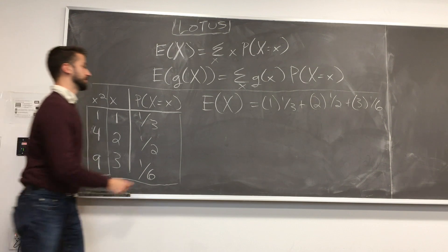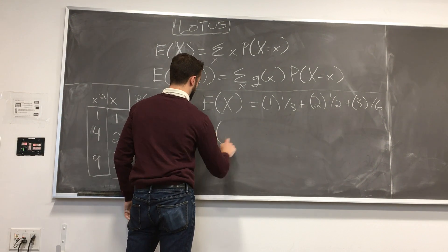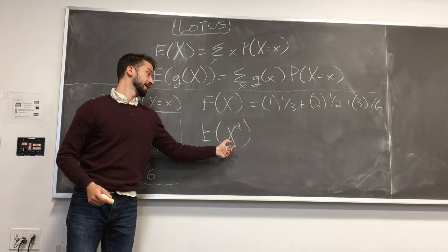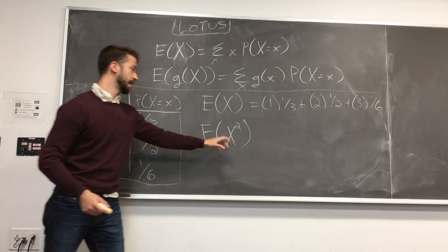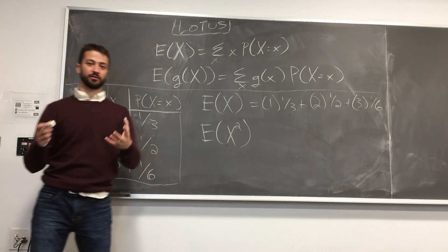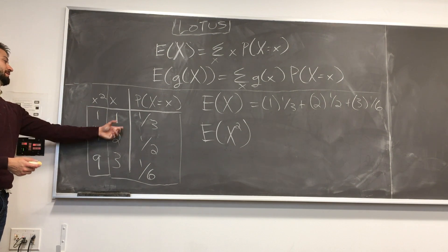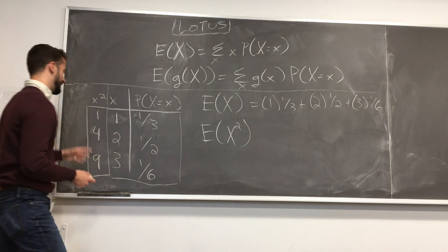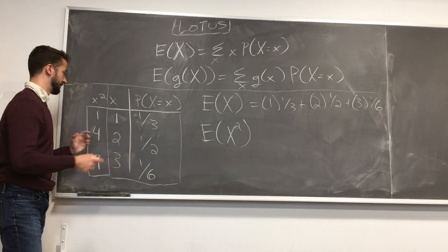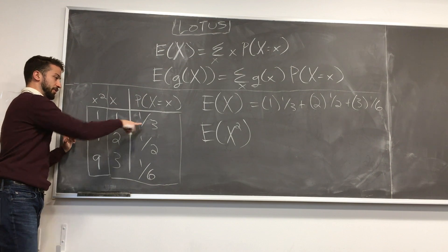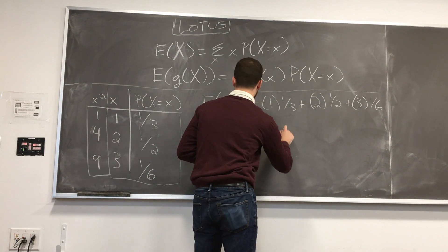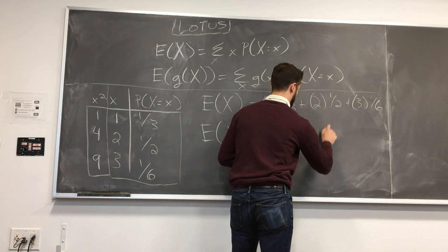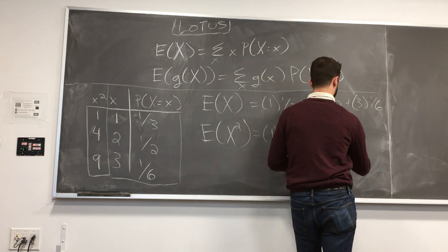And this is what you would do if someone asked you to find the expected value of x squared. This is just saying, on average, what is x squared, right? This is sort of what you would do. You would say, okay, well, let me square my big x when I square the values it comes out to. And now, it's pretty clear how you would proceed, right? That big x squared comes out to 1 a third of the time. It comes out to 4 half the time. So, 4 times a half. And finally, it comes out to 9, 1 sixth of the time.